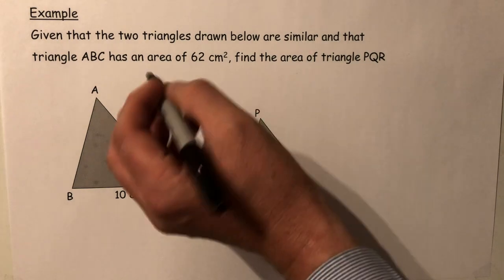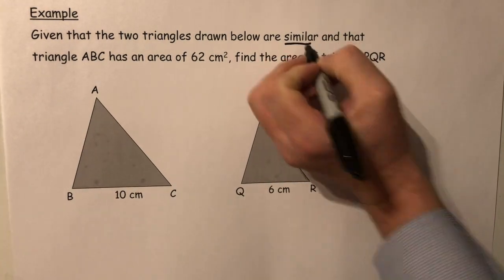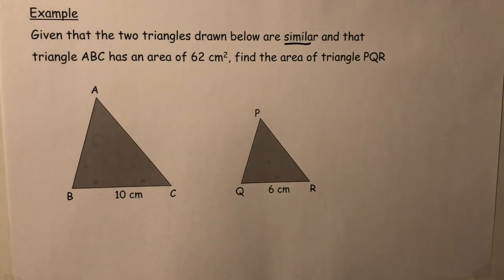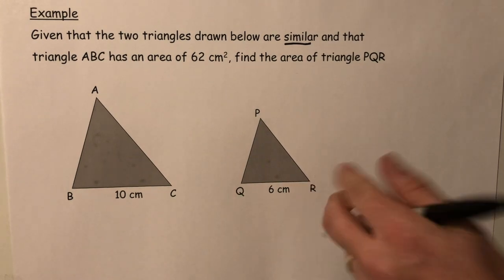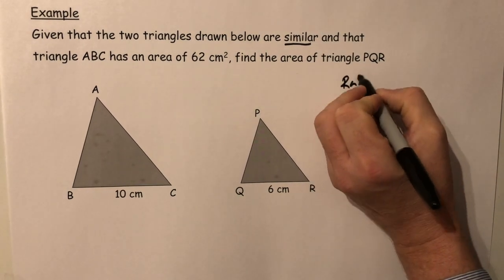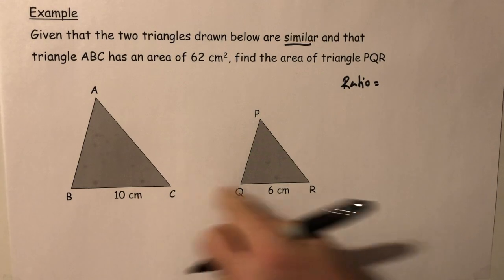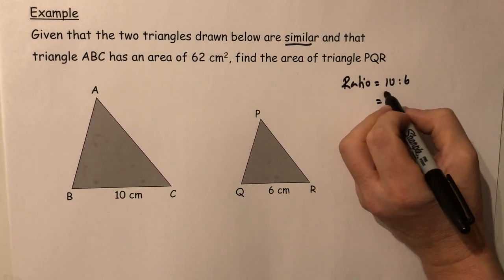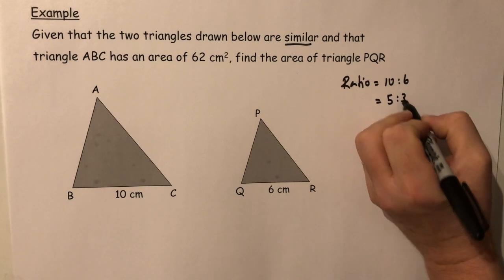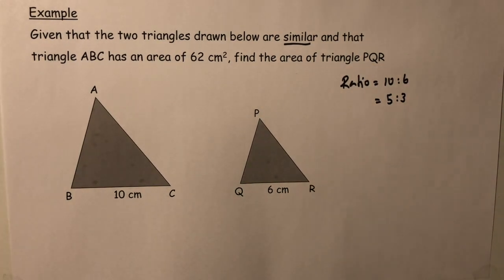Now in this particular question we are told that these two triangles are similar, that means that the sides are in a given ratio. And we can see that this side here must therefore match with this side here. So the ratio of the sides is 10 to 6, which can simplify as 5 to 3.